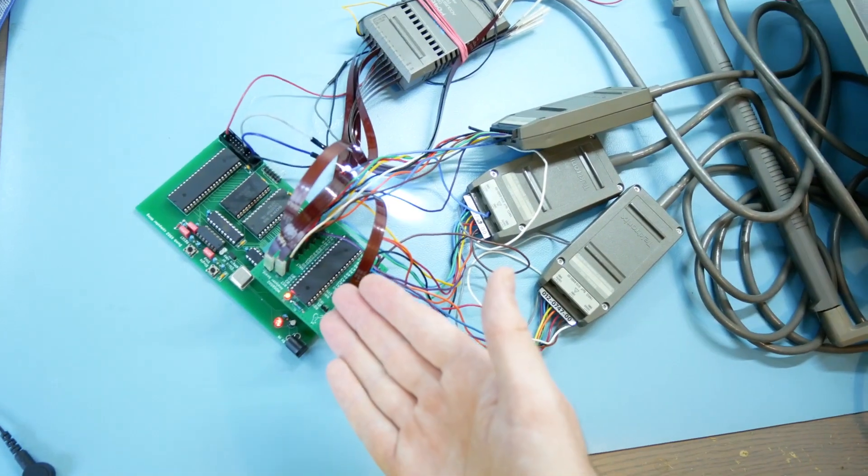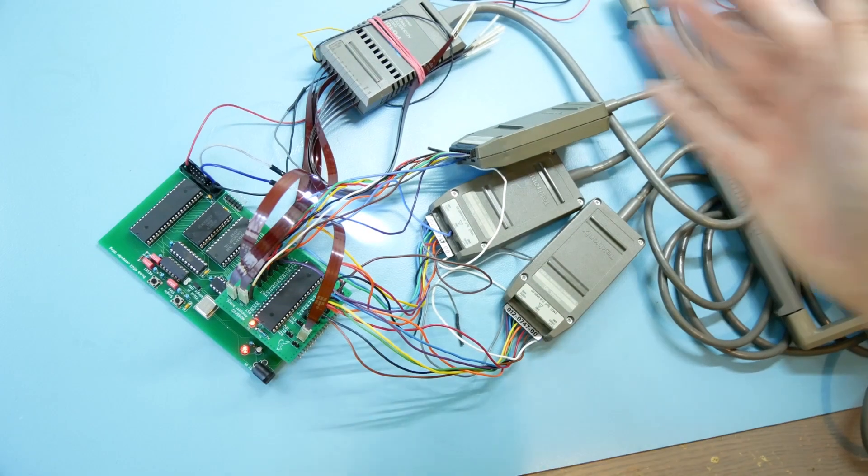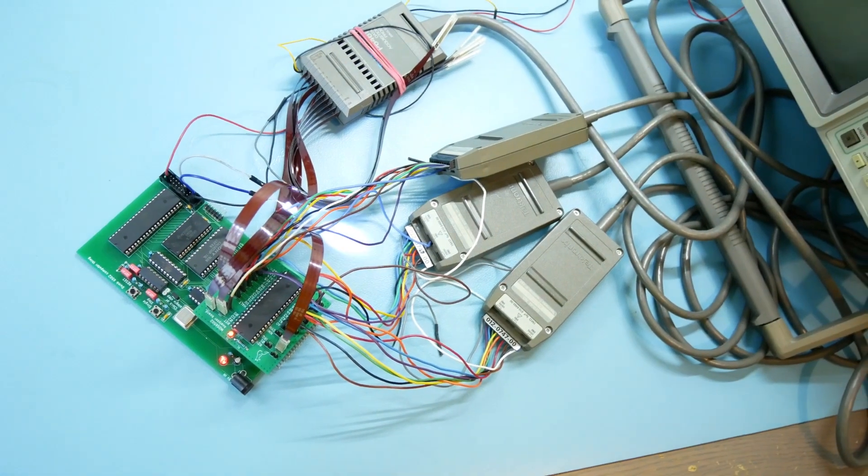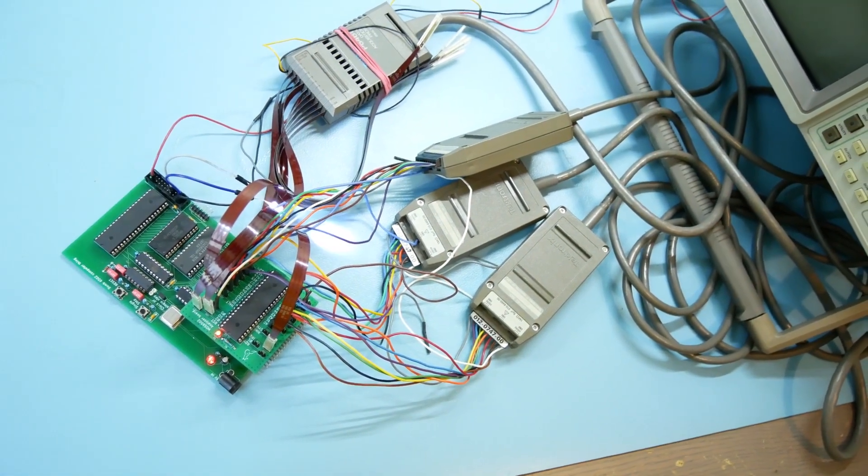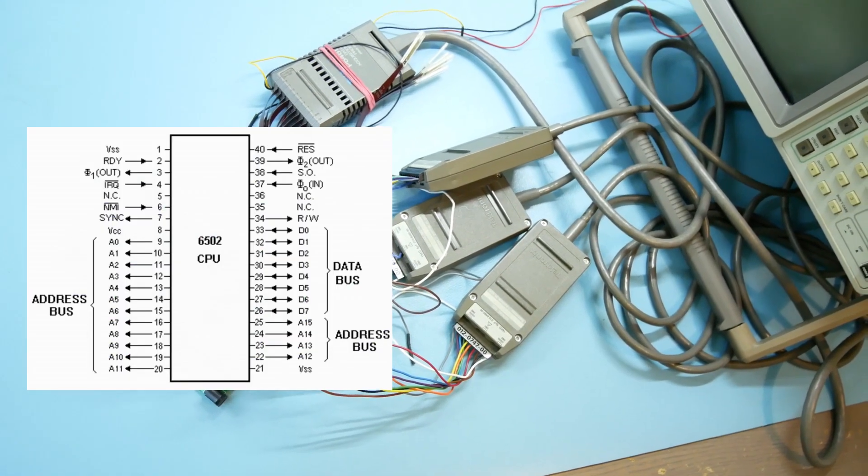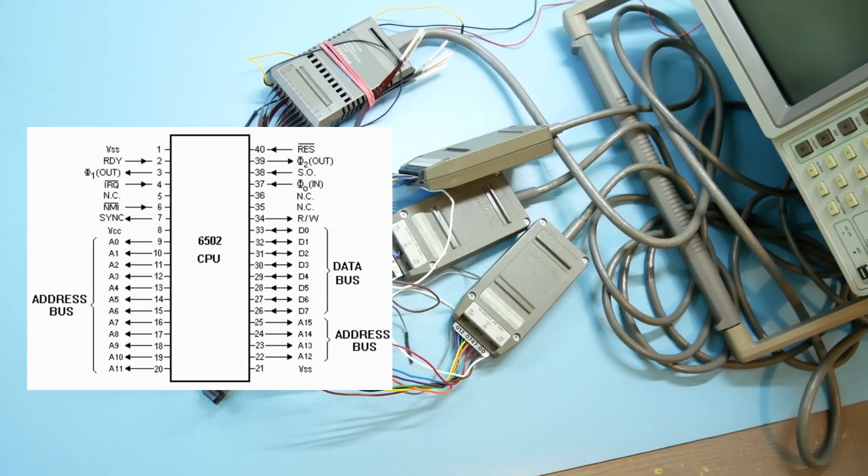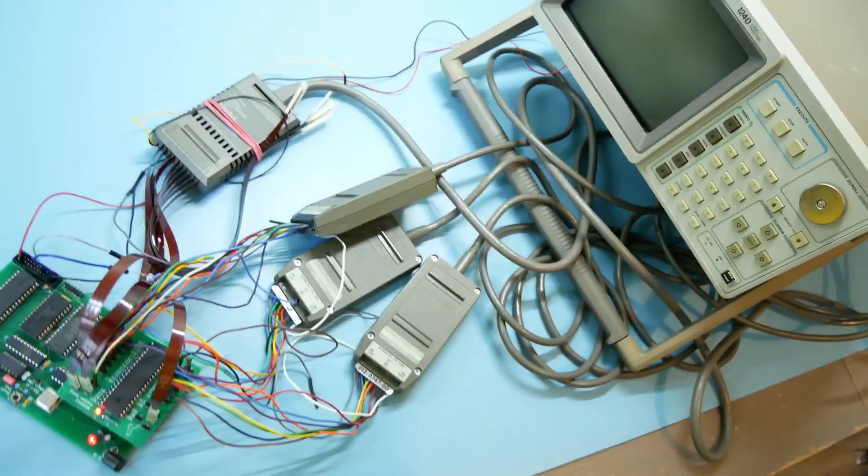This here is a 6502 computer board I made a while ago running a blinky LED example code with all the probes hooked up to debug that. Now a 6502 has 16 address bits, 8 data bits and some control signals, so to properly debug that you need around 30 channels which is where this logic analyzer shines.